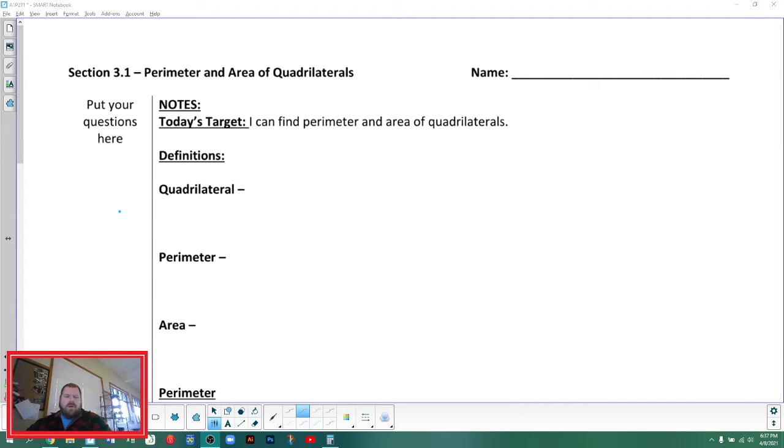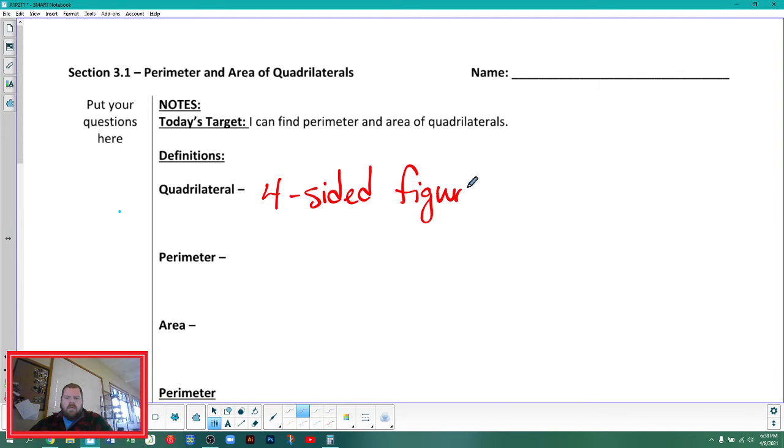Hello, and welcome to the Section 3.1 lecture today for Algebra 1, Part 2. We're going to start looking at some geometry stuff, which I'm really excited for. I'm a big fan of geometry. I've taught it multiple years, and I really enjoy it just as a subject. Today we're going to start by looking at perimeter and area of quadrilaterals. First, a quadrilateral - it's a four-sided figure, a shape that has four sides, two-dimensional shape with four sides.